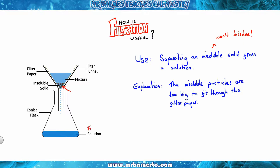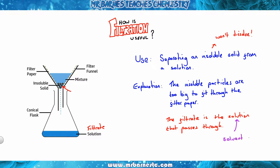What will happen is the filtrate will pass through. The filtrate is the solution that passes through — that liquid which comes through — and our solution is our solvent (water) and our solute (our dissolved solid). So if there's any salt left, it will fit through the filter paper and end up in our filtrate at the bottom of our conical flask.